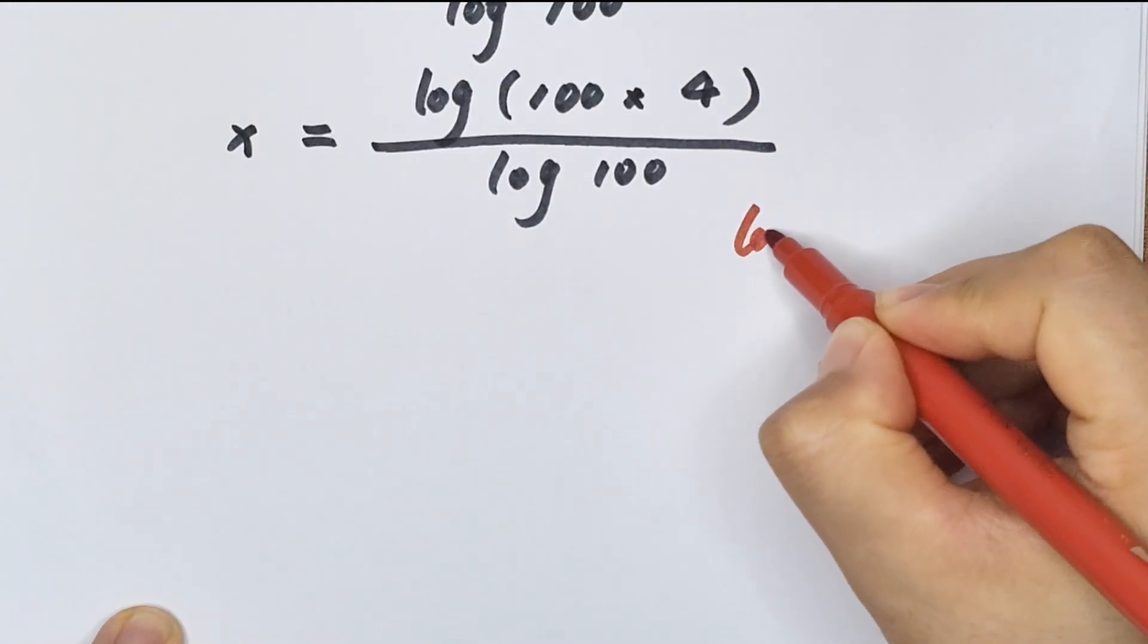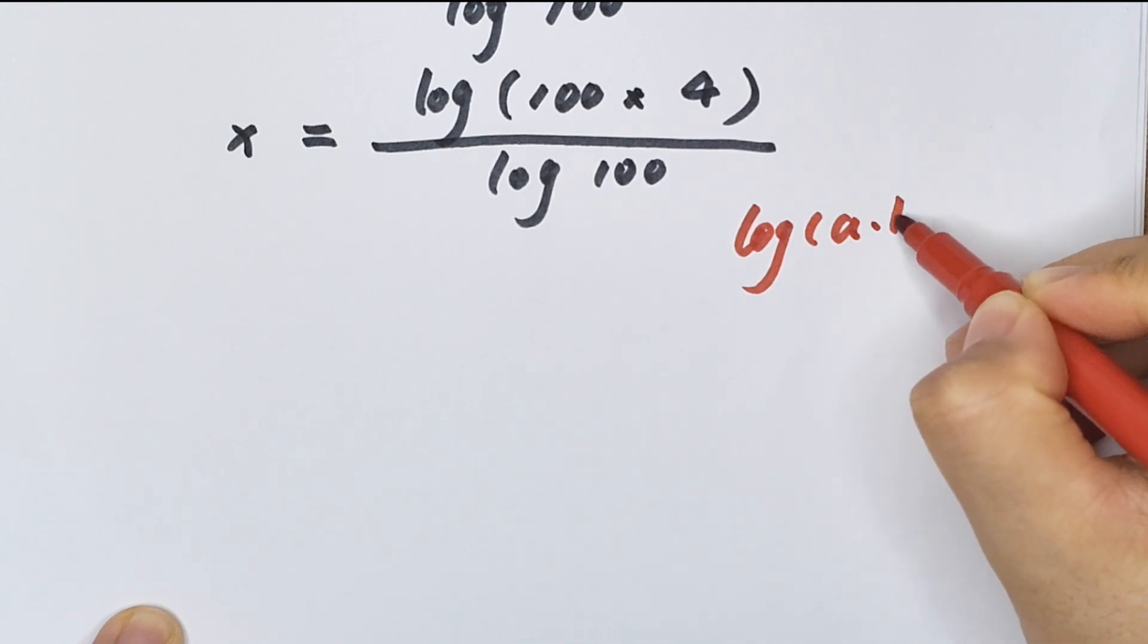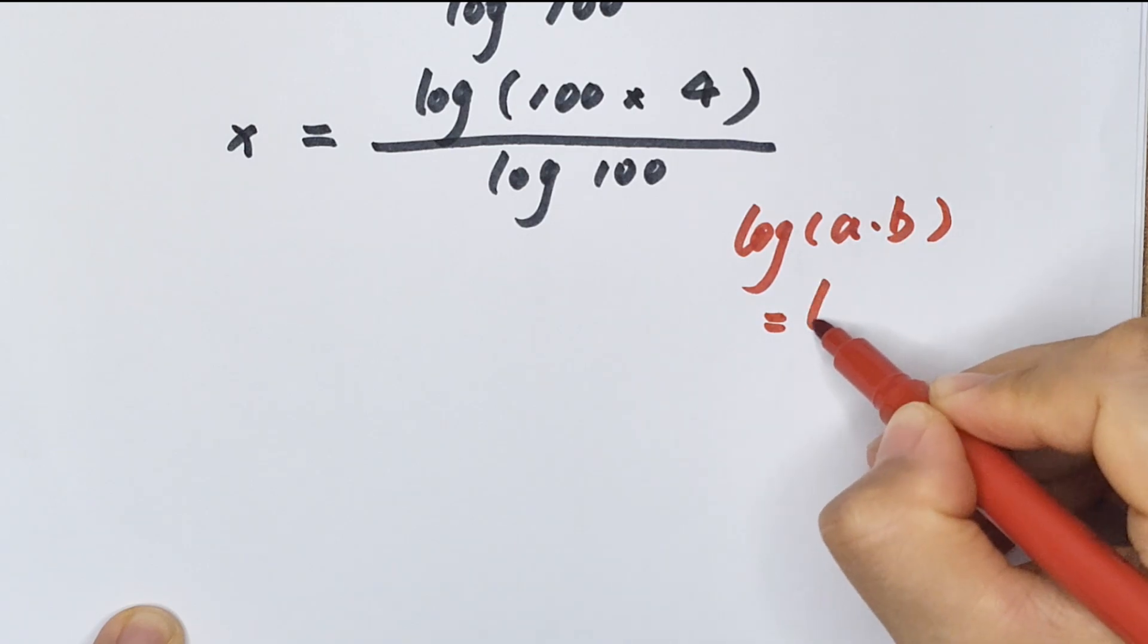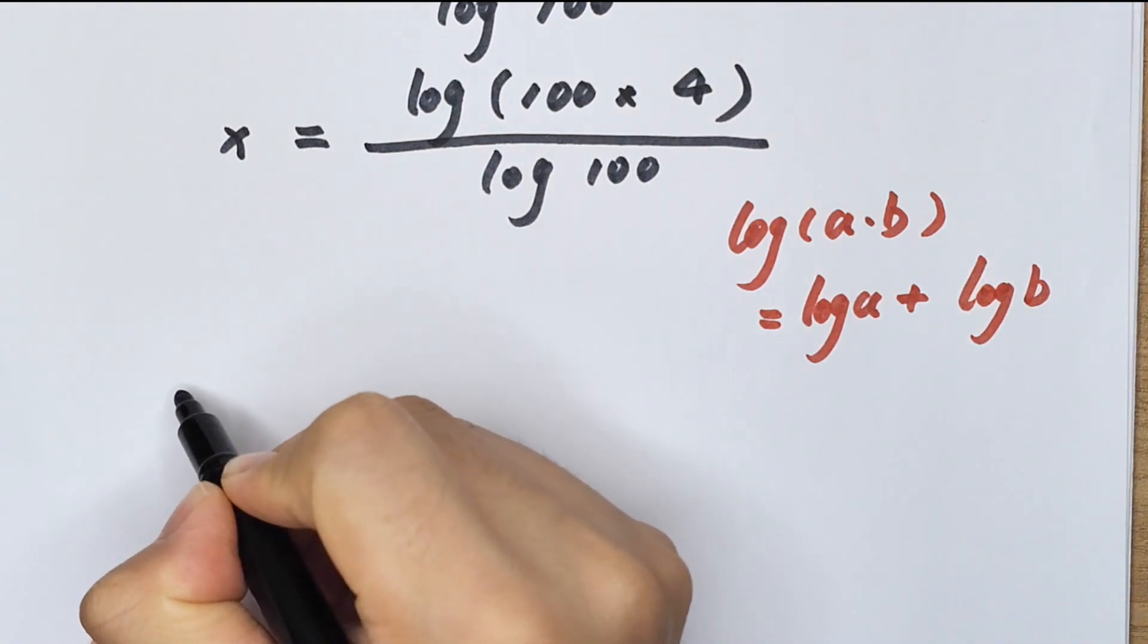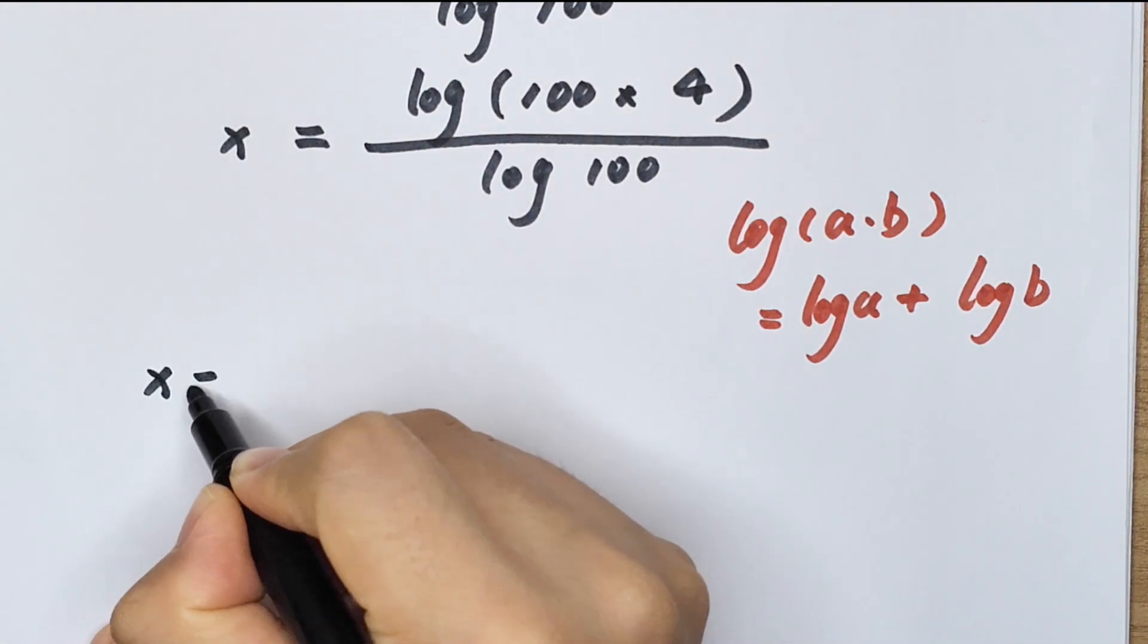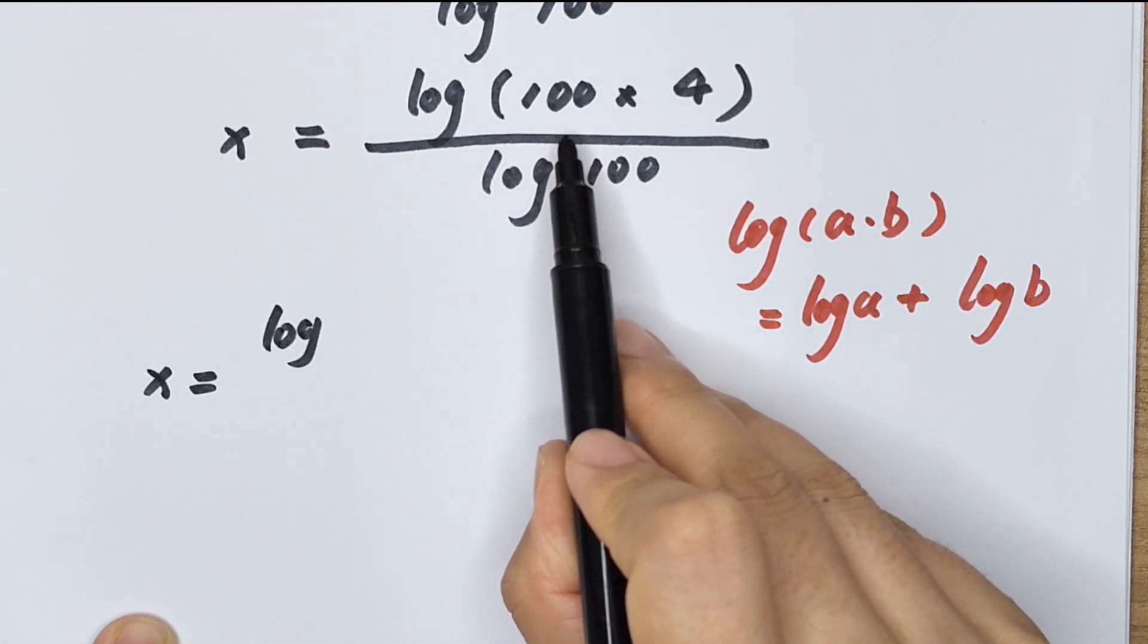So x equals log(100) - which is the same as 10 squared - plus log(4), which is 2 squared, over log(10 squared).